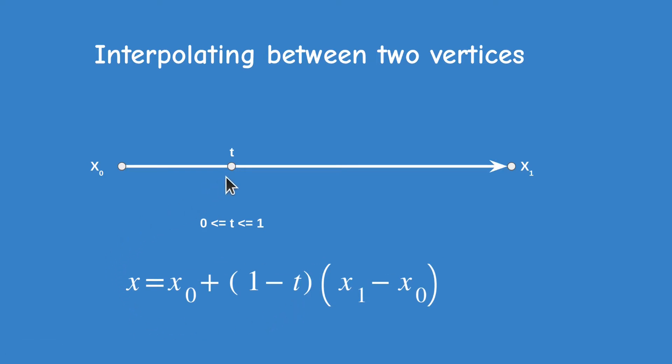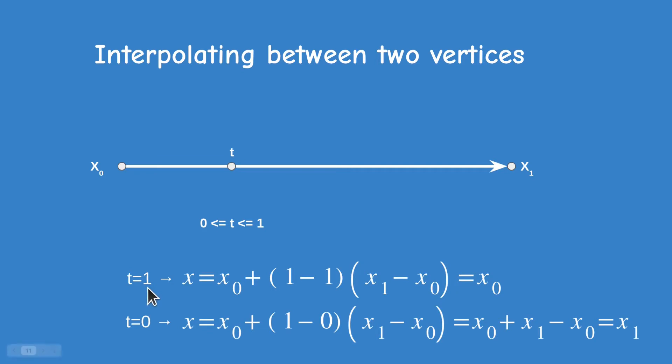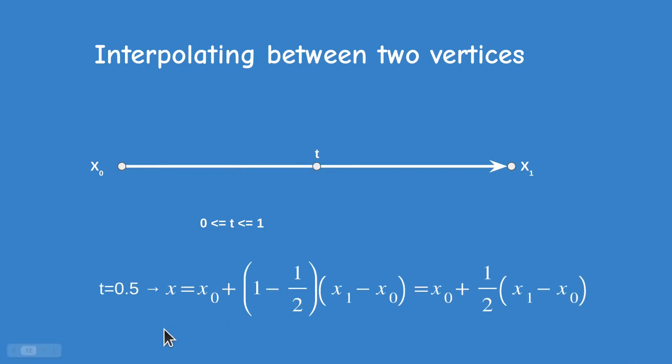Let's do a quick check. If t equals 1 we get x0 because the rest of the formula turns out as 0, and if t equals 0 we get x0 plus x1 minus x0 which is x1. If we set t to half we would add half of the delta between the two points to x0, which will take us exactly to the center.